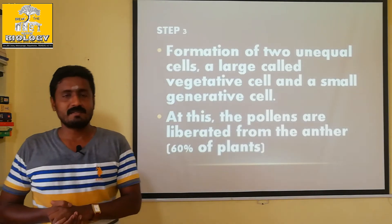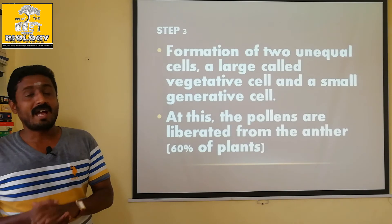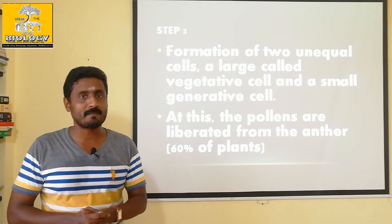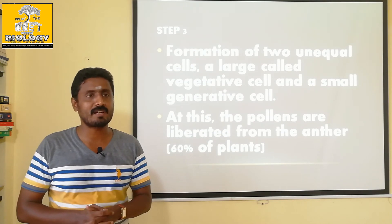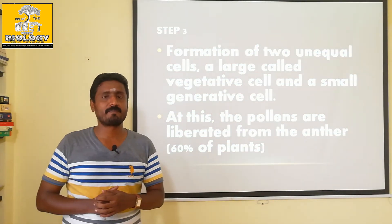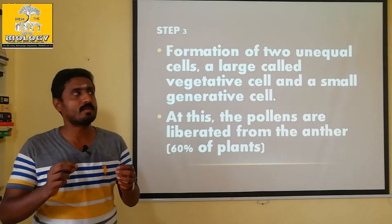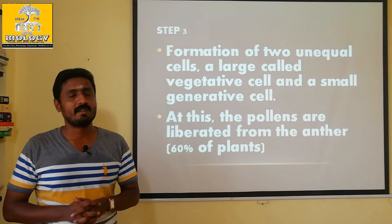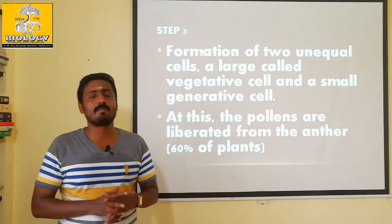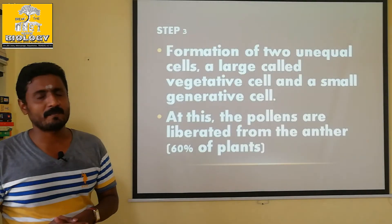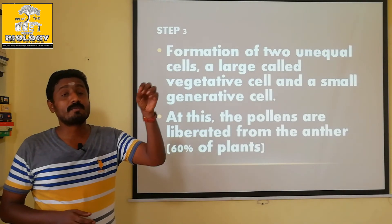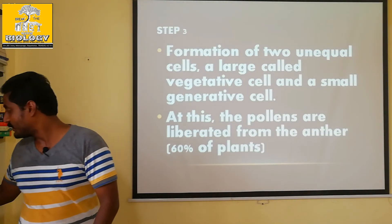The second stage is anther dehiscence. The pollen grains are released and reach the stigma of another plant. The pollen grain is released as the anther dehisces, and it travels to land on the stigma.